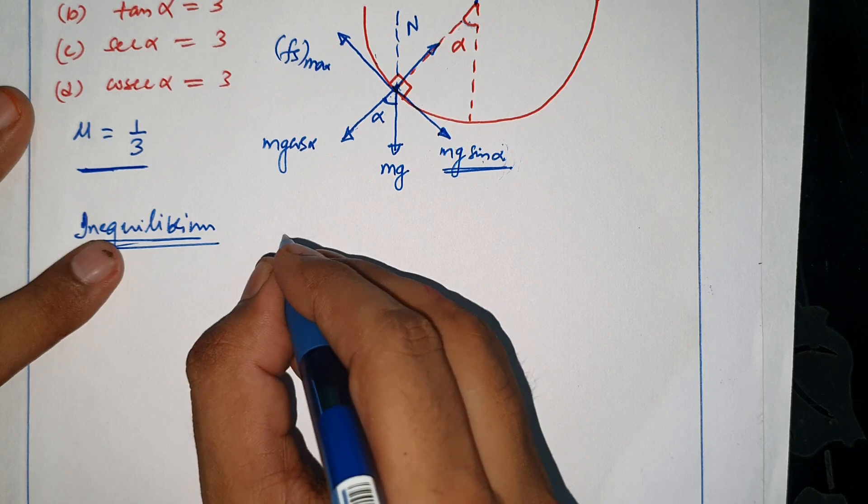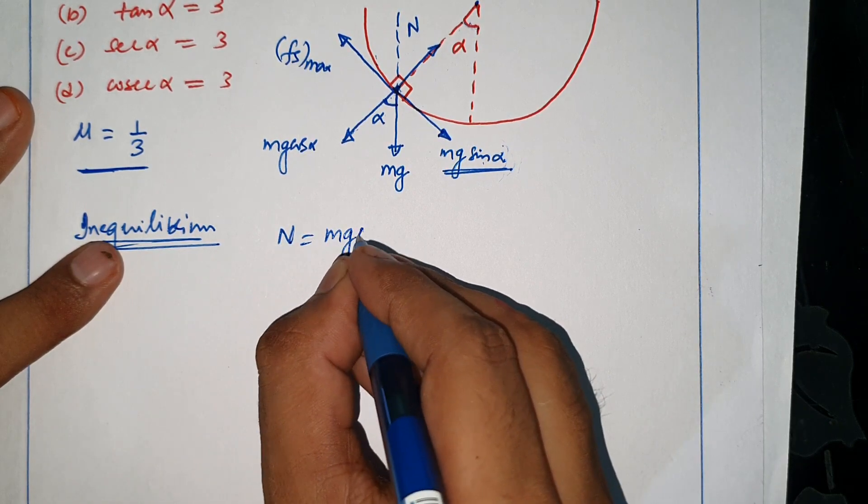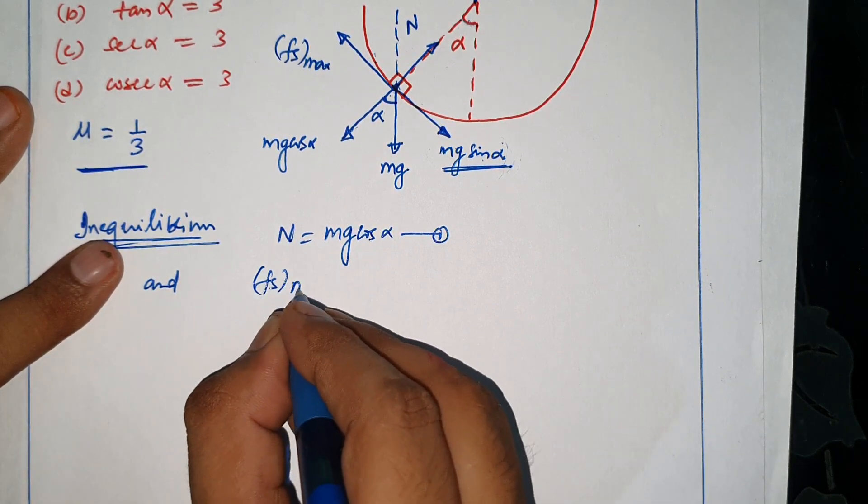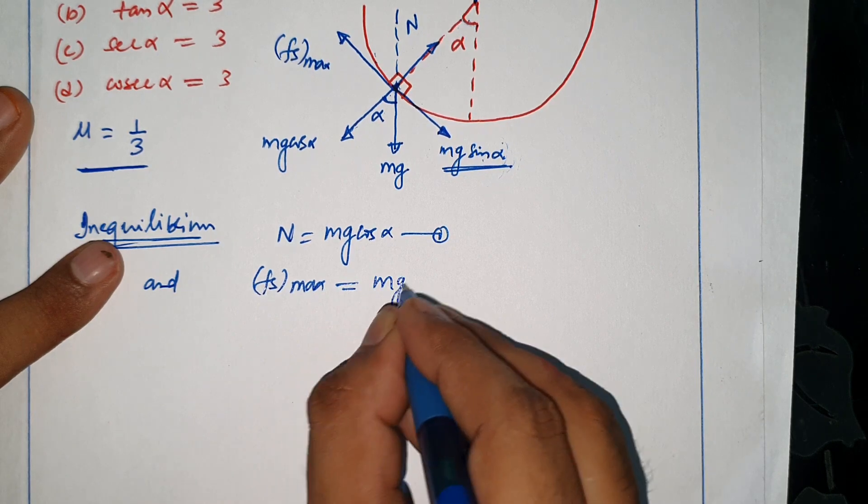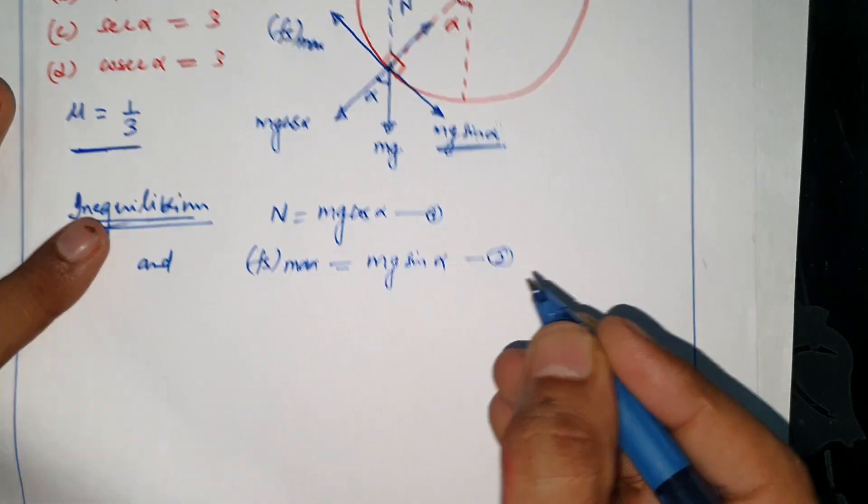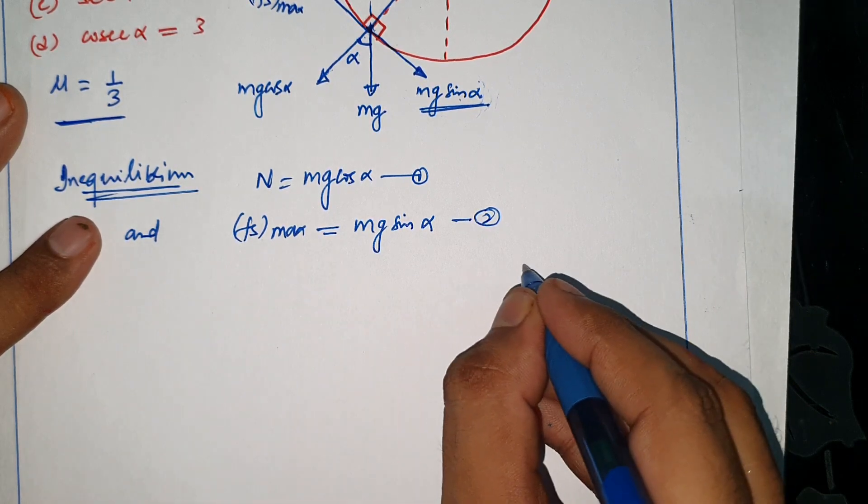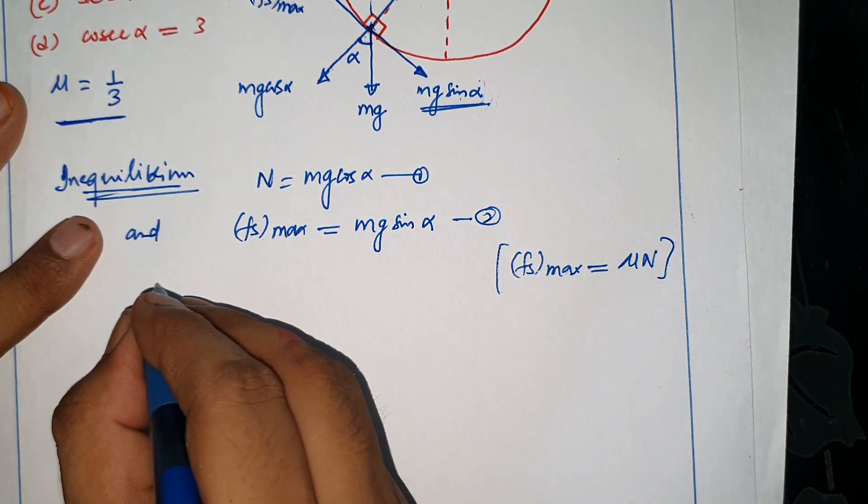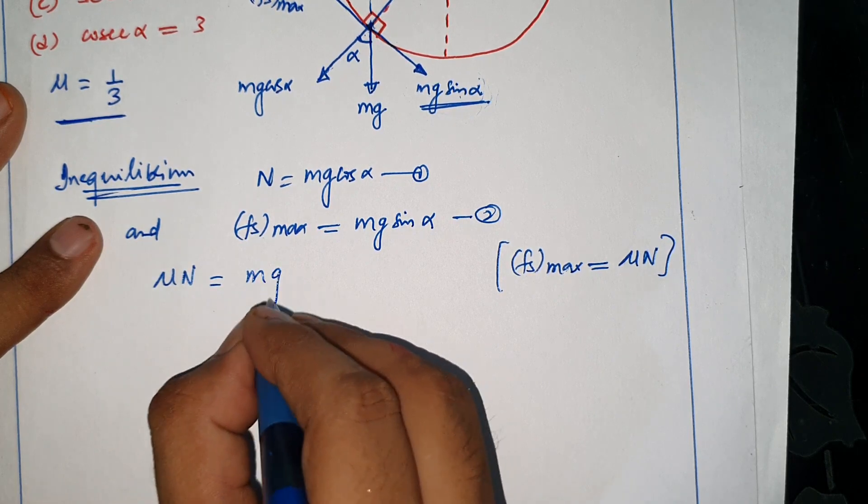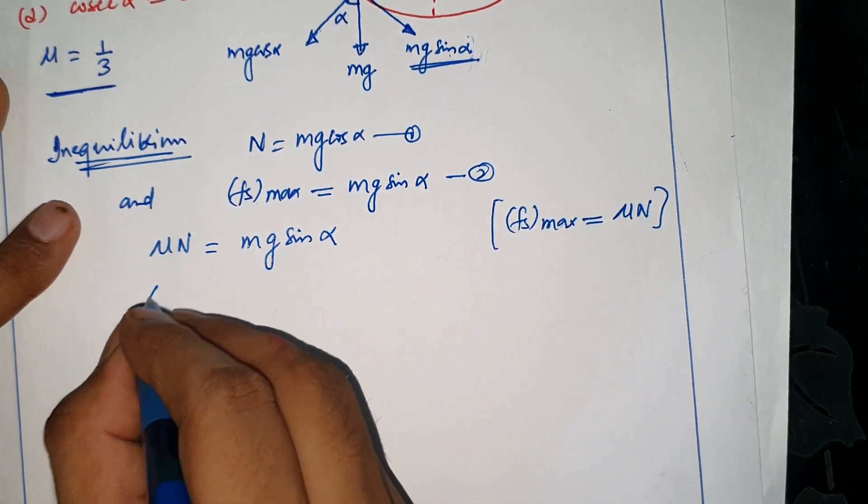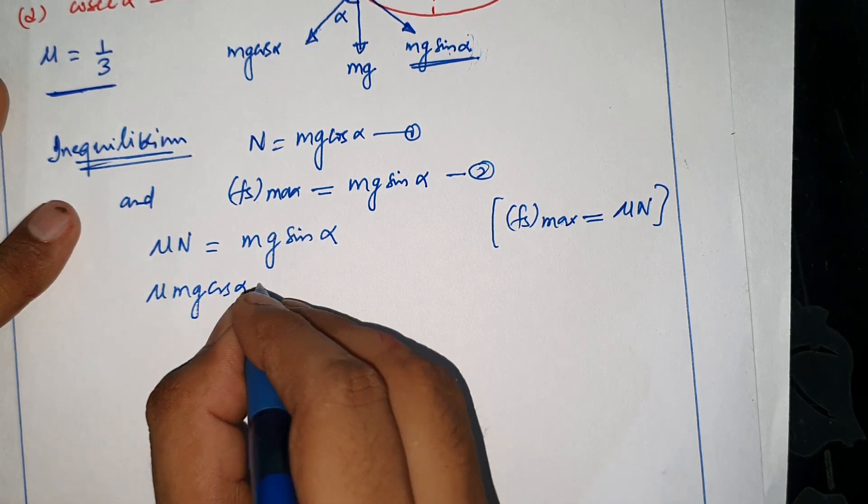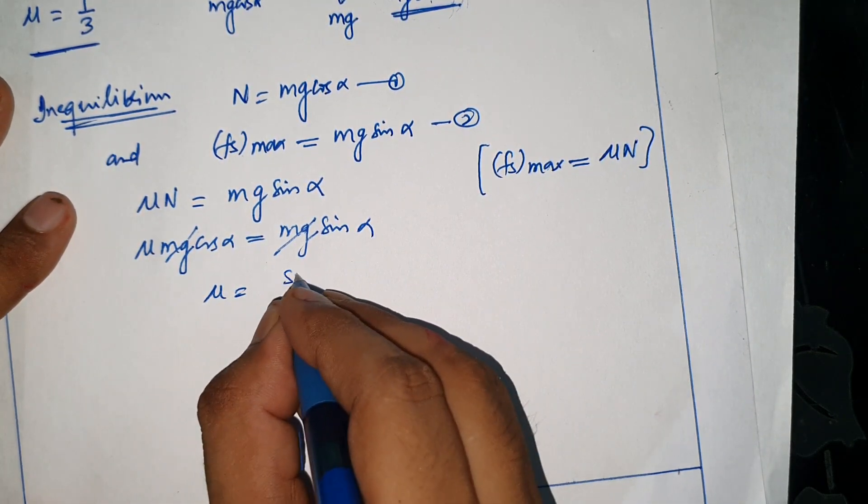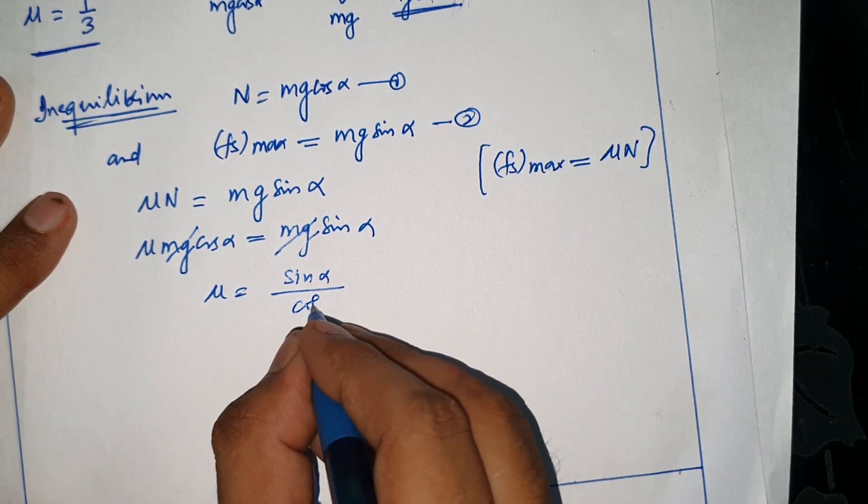You can balance N equals mg cos alpha and limiting friction which is fs maximum will balance mg sin alpha. But fs maximum how much is it? fs maximum which is limiting friction is mu into normal reaction. So if we write here mu into N, then we write mg sin alpha. And N value we put mg cos alpha equal to mg sin alpha. mg cancels and mu is equal to sin alpha upon cos alpha.